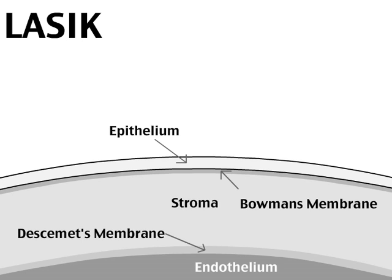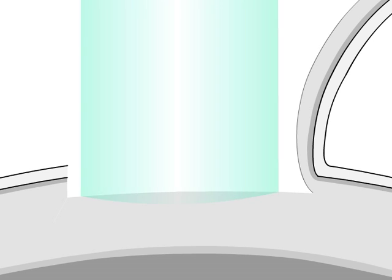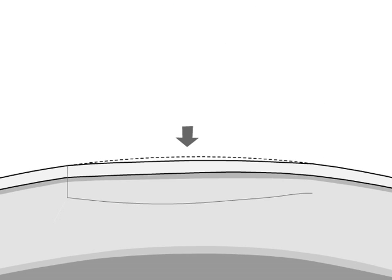LASIK is a two-step procedure which involves first making a corneal flap. This flap is made into the stroma of the cornea with an instrument called a microkeratome, or sometimes a laser may be used. The flap is then lifted and the excimer laser is used to reshape the cornea, basically changing the corneal curvature and removing stromal tissue. The corneal flap is then placed back into position and the procedure is completed.